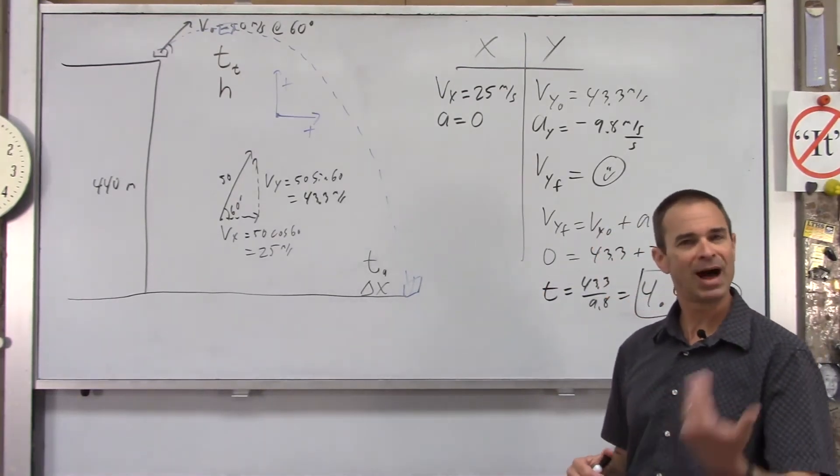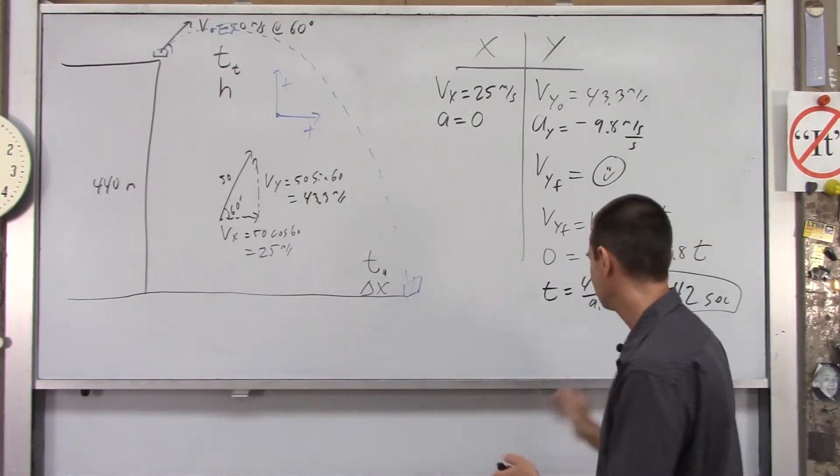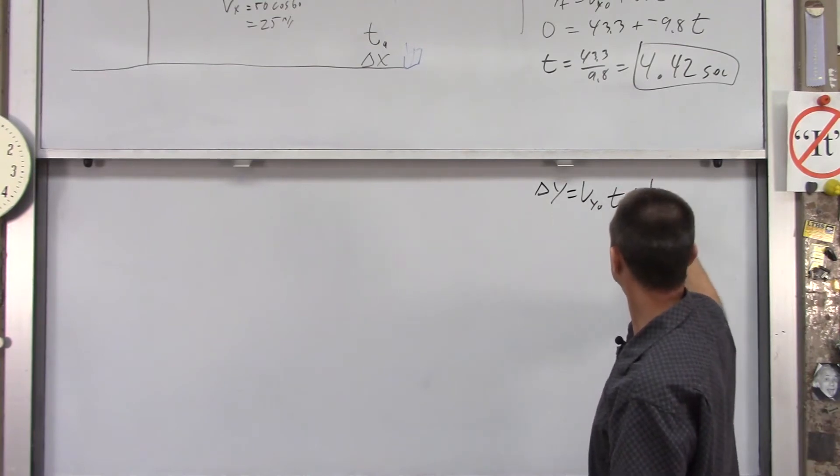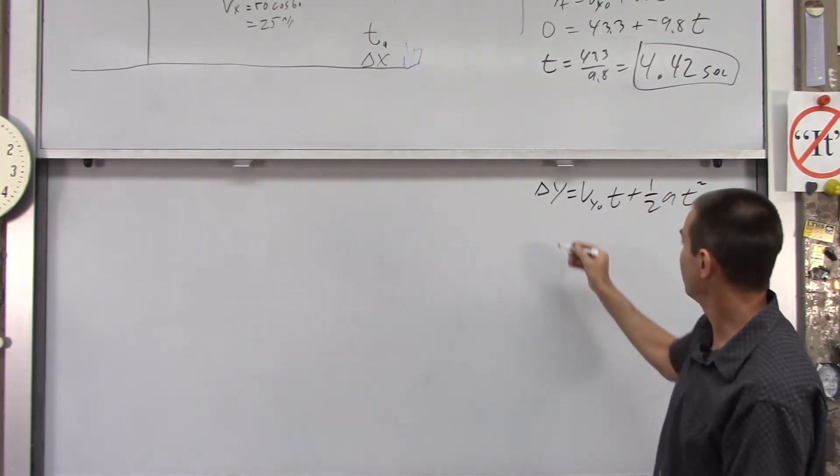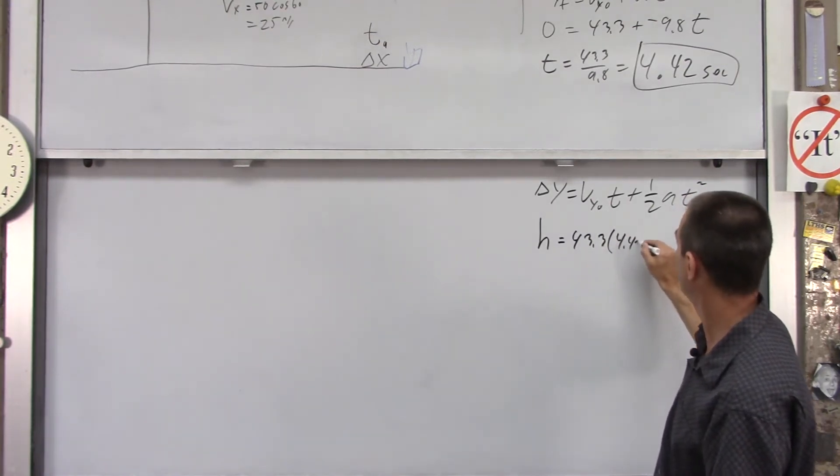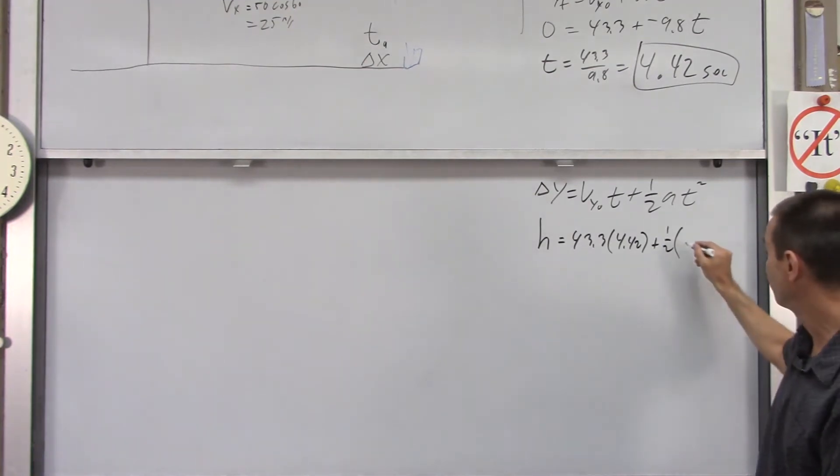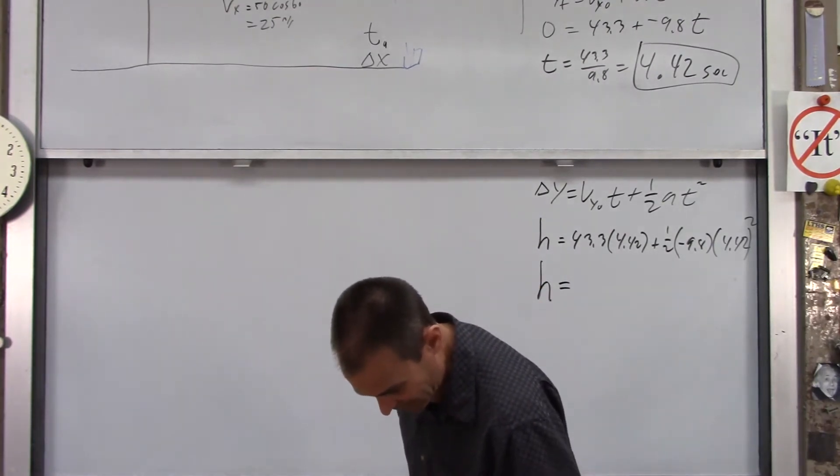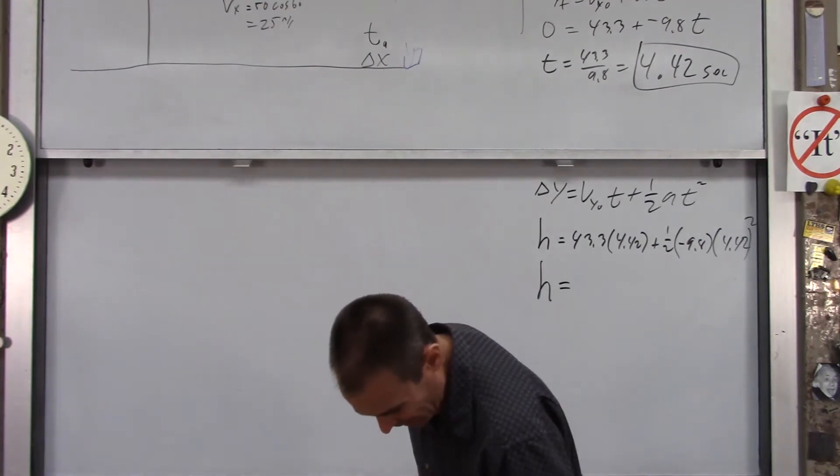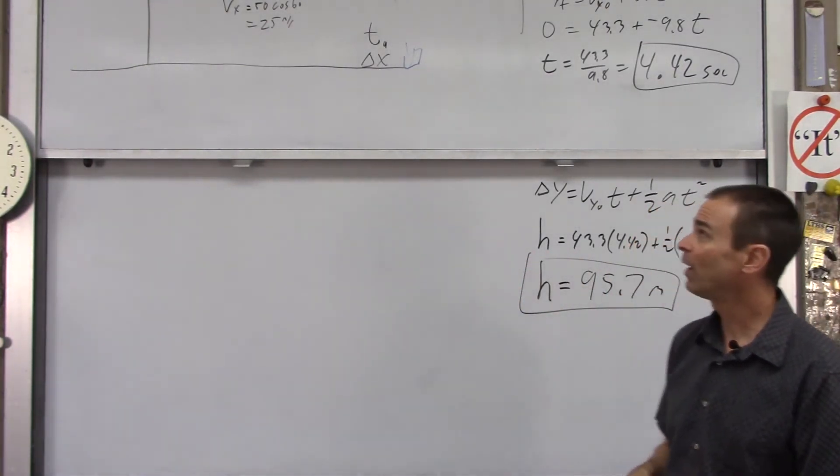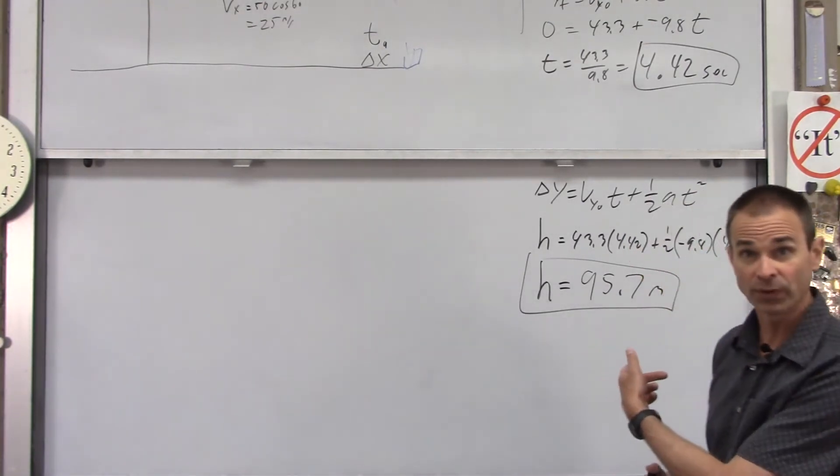How high does it go? Well, at that point, you have a couple options to find that max height. Now that you have time, you have all kinds of options. I will go ahead and use delta Y equals VY naught T plus 1 half AT squared. So we do that. This will become height. That's the height above the launch point. VY naught is 43.3. Our time we just figured out, 4.42 plus 1 half A is negative 9.8. And then T squared, you got 4.42 squared. If you plug and chug those in your calculator, I got 95.7 meters approximately. Now again, that's the height above the launch point. If you wanted the height above the ground that it achieves, you would just add 440 to that.